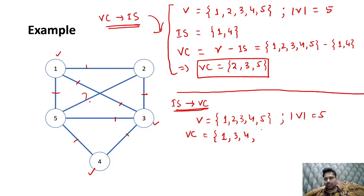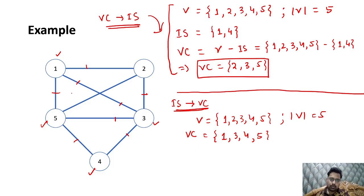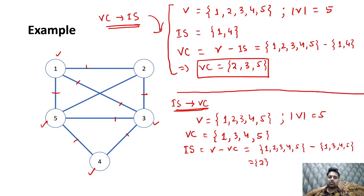Our target should be the minimum vertex cover. Remember: minimum vertex cover gives maximum independent set, and maximum vertex cover gives minimum independent set. Now if we pick vertex cover {1, 3, 4, 5}, checking all edges are covered. Then for independent set: V minus VC = {1,2,3,4,5} minus {1,3,4,5} = {2}. So the independent set is just node 2. Vice versa is possible.